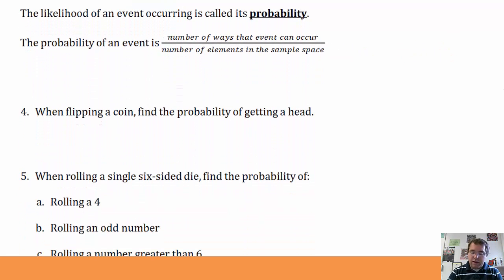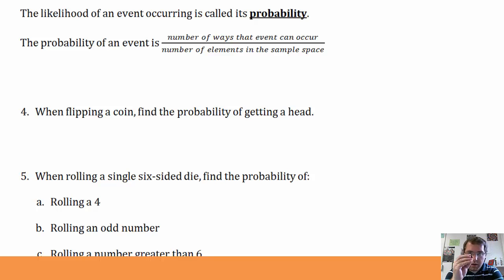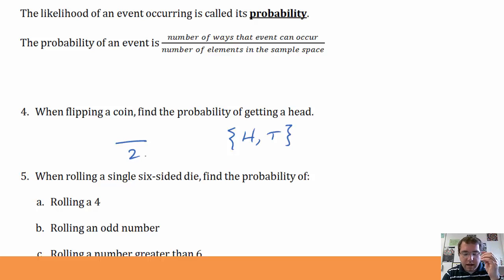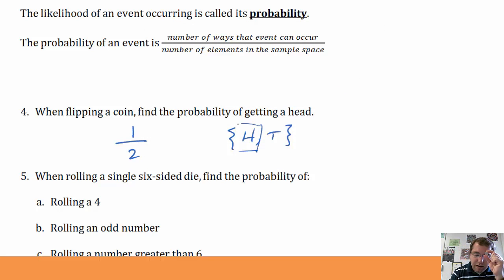The likelihood of an event occurring is called its probability. The probability of an event is essentially the number of ways that the event can occur divided by the number of elements in the sample space. So when I flip a coin, what's the probability of getting a head? There are two possible outcomes, heads and tails. The number of elements in the sample space is 2 — that's the denominator. The number of ways that my event can occur is just 1. So the probability of getting a head is 1/2.